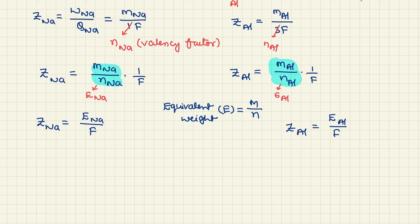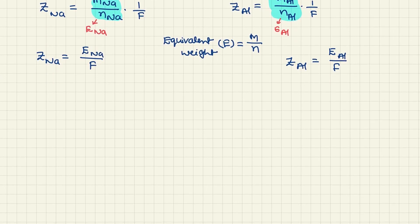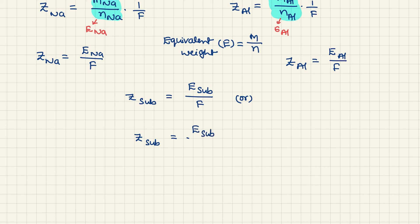From these two relations, we can generalize the expression for Z. The Z value of any substance is equal to the equivalent weight of the substance divided by Faraday, or Z = equivalent weight of the substance divided by 96,500. These are the general expressions for Z.